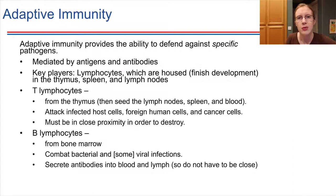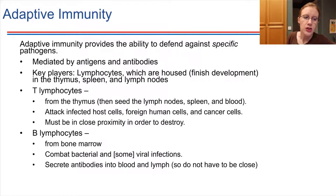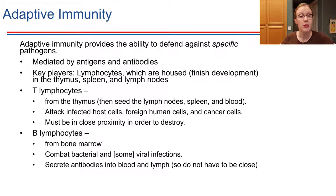B lymphocytes — the B comes from bone marrow, which is where these cells come from. Primarily what they do is attack bacterial infections, and in some cases viral infections too. They're not attacking our own cells, but rather specifically bacterial and viral targets. B lymphocytes are the cells that produce antibodies. They keep a set of antibodies on their surface, embedded in their own plasma membranes, so they're decorated with antibodies. But they also secrete free antibodies that can circulate in the blood and also in the lymph.